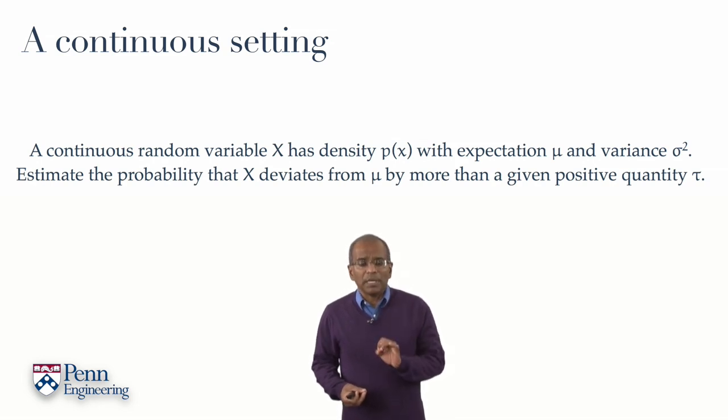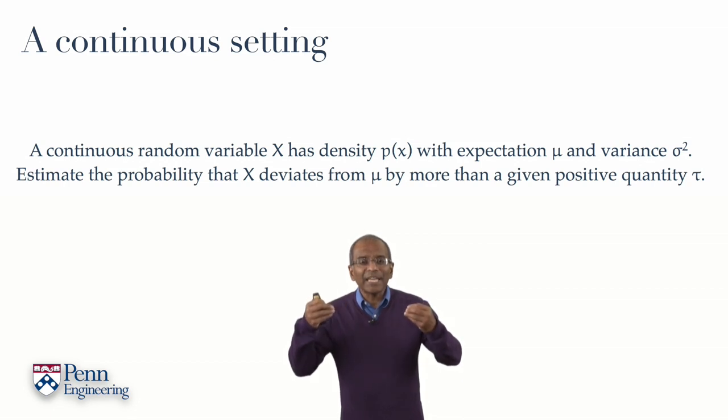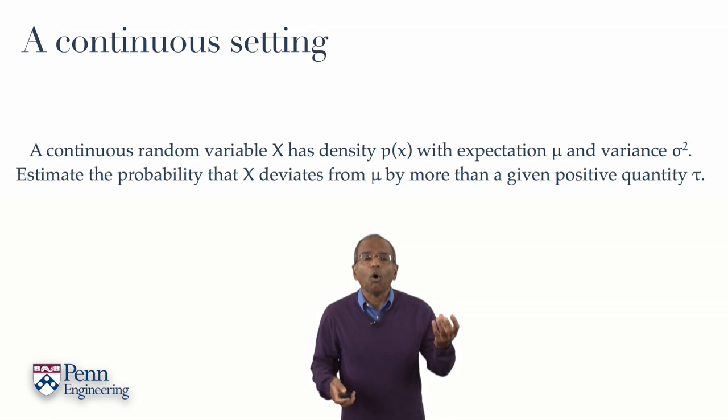What is the probability that for a given deviation tau, some positive number tau, that x deviates from its center, from mu, by tau or more?